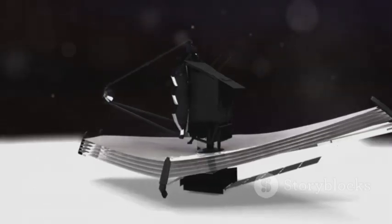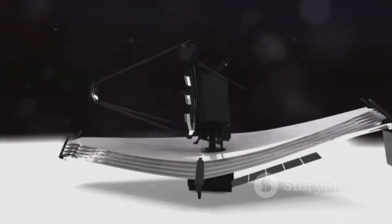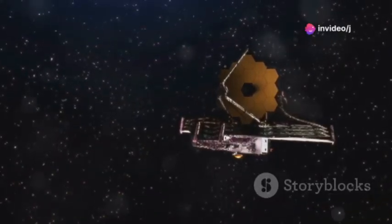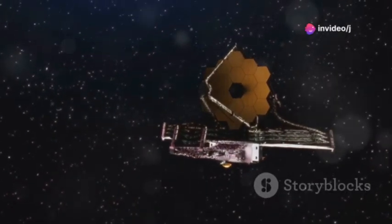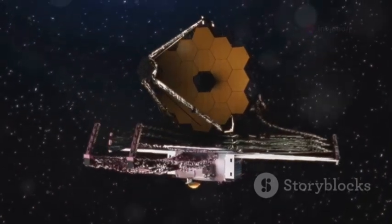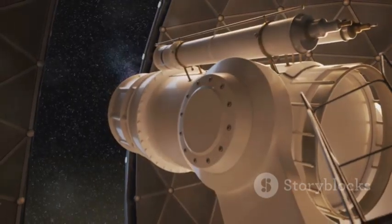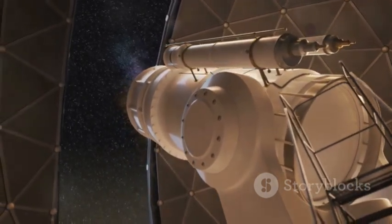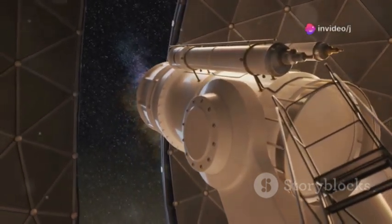Webb orbits at the second Lagrange point, or L2, a stable spot 1.5 million kilometers from Earth. Here, it can keep all sources of heat and light safely behind it, maintaining its frigid temperature. This distant outpost is the perfect vantage point for its silent, revolutionary watch of the cosmos, far from the interference of our planet.